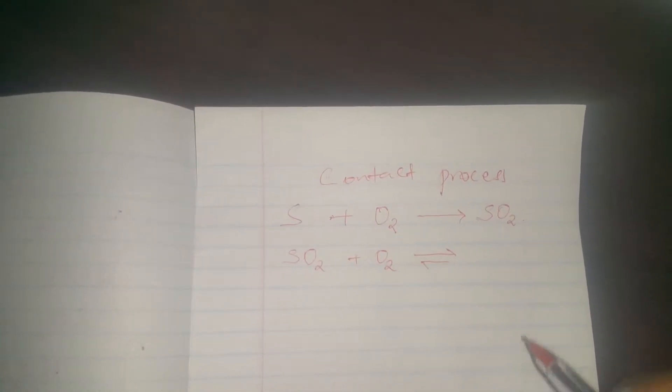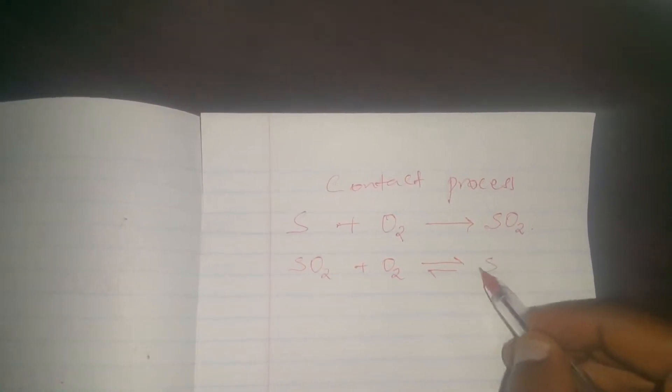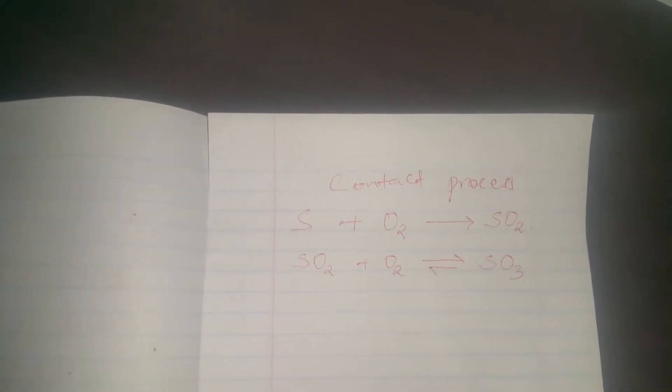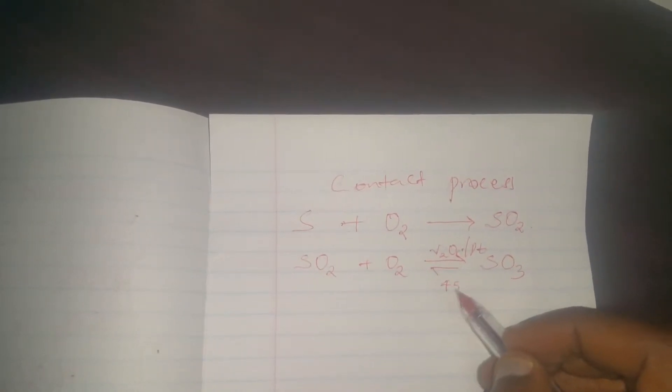The sulfur dioxide burns in oxygen to form sulfur trioxide. This reaction occurs in the presence of vanadium five oxide or platinum which acts as a catalyst. The reaction occurs at temperatures around 450 degrees Celsius. In this reaction two moles of sulfur trioxide are formed.